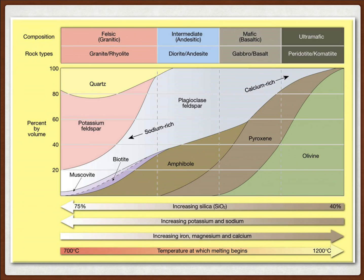Another way to visualize this would be looking at this diagram here. We have felsic, intermediate, and then mafic. They give us different types of rock types. The pink area is outlining felsic — granite and rhyolite. The intermediate is diorite and andesite. And then there's mafic, which is gabbro and basalt. There is ultramafic on the far right, but that's a little beyond our level here. Items more towards the left will have increased silica, items to the right will have less. Items to the right are also warmer, and the ones on the left are a little bit cooler — by about 500 degrees Celsius, but still incredibly hot to us as humans.